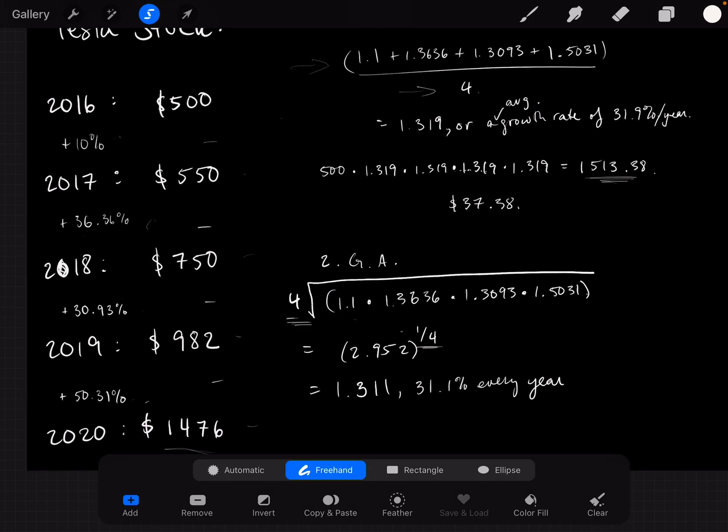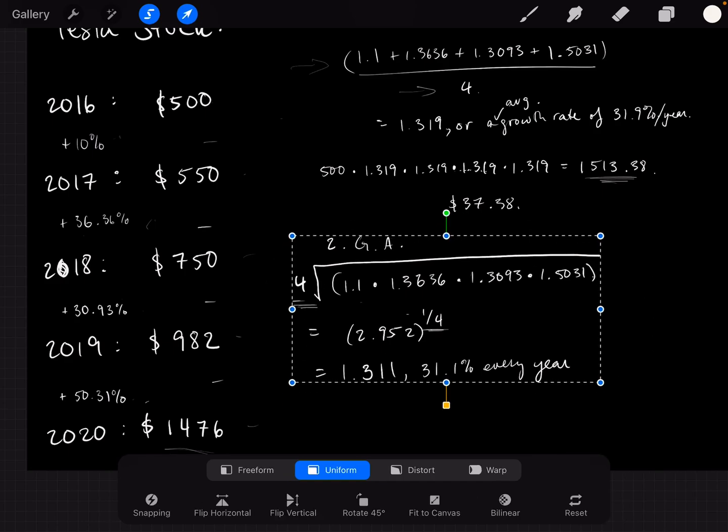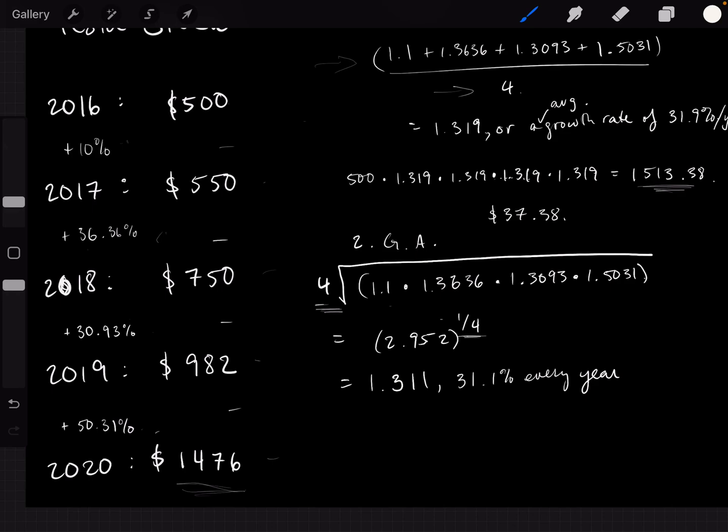Now, let's test it out exactly how we tested out the arithmetic average. What we do is we take 500, and we multiply it by 1.311, which is to say 31%, and we multiply it 4 terms, because there are 4 years. I can write all of this by just going 1.319 to the power of 4, because a number multiplied by itself 4 times is the same as a number being raised to the power of 4.